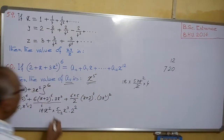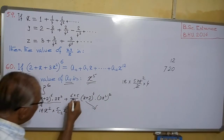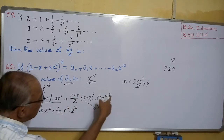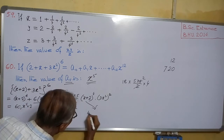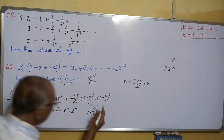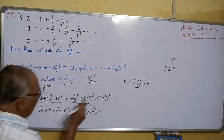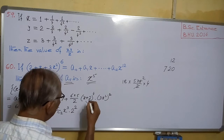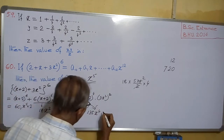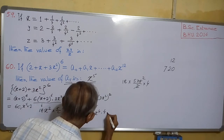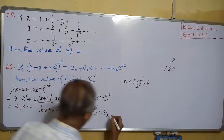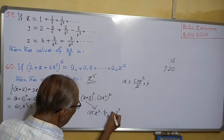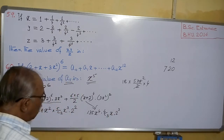Now we have to find the coefficient from the third group. This can be written as 15·(x + 2)⁴·9x⁴ = 135x⁴·(x + 2)⁴. We need only x from (x + 2)⁴ to get x⁵. x will appear in the fourth term, that is 4C3·x·2³.